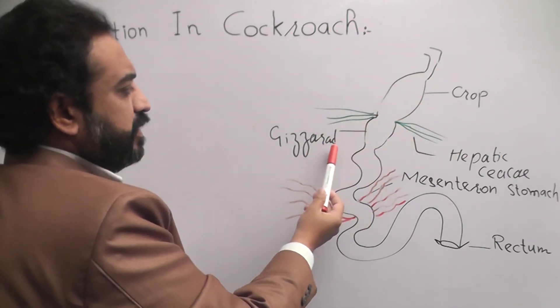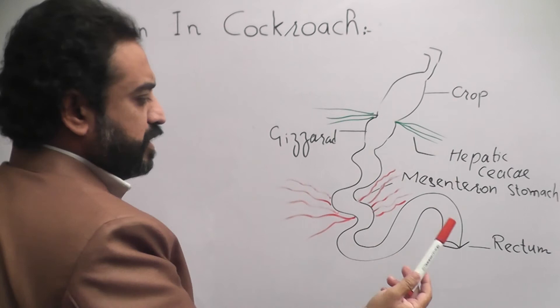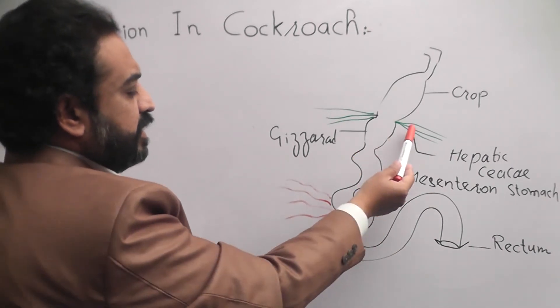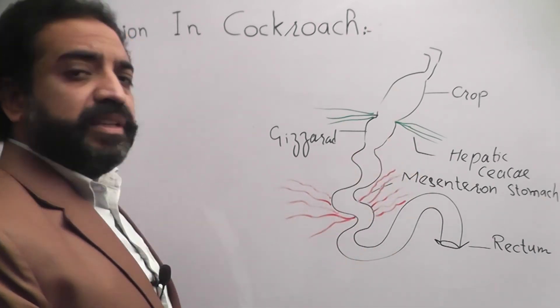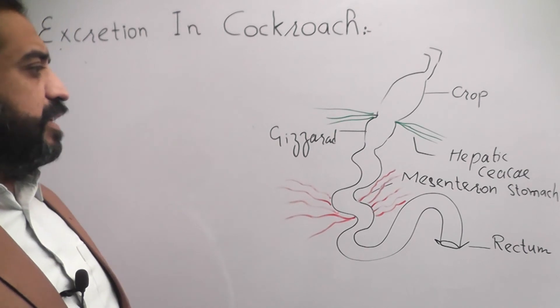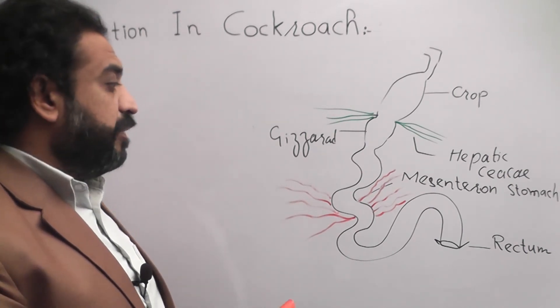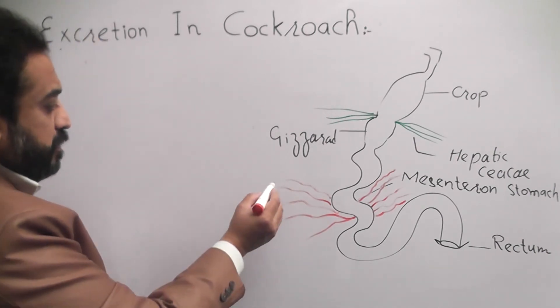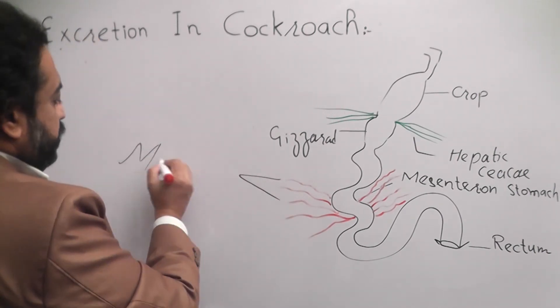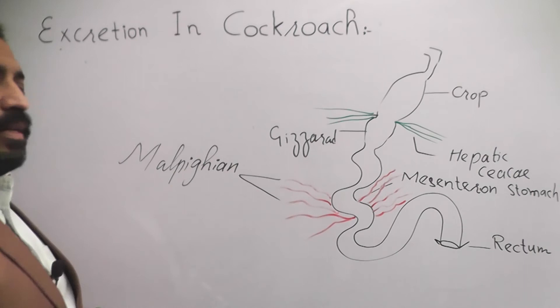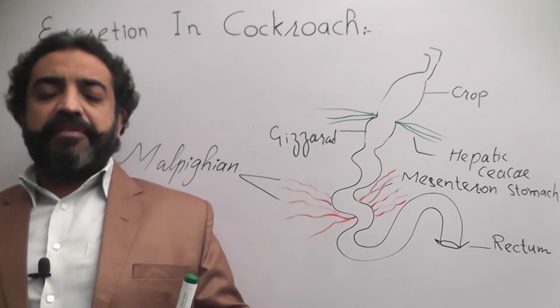Here is the crop. Here is the gizzard. Here is the mesenteron stomach. Here is the rectum. And here are the structures called Malpighian tubules. This cavity is the hemoseal.